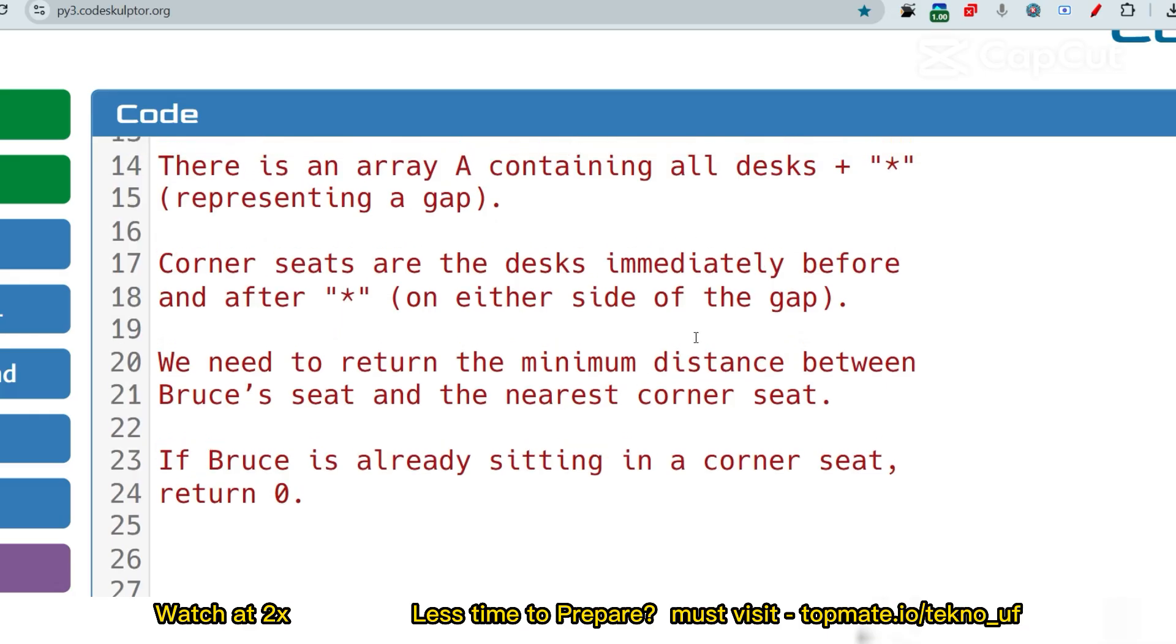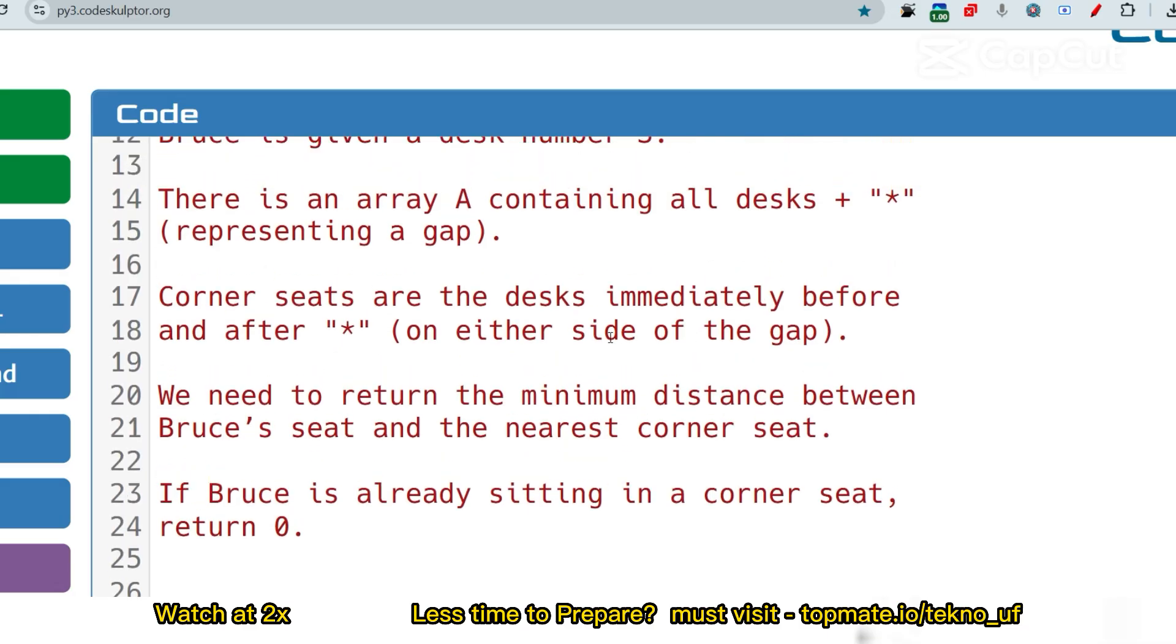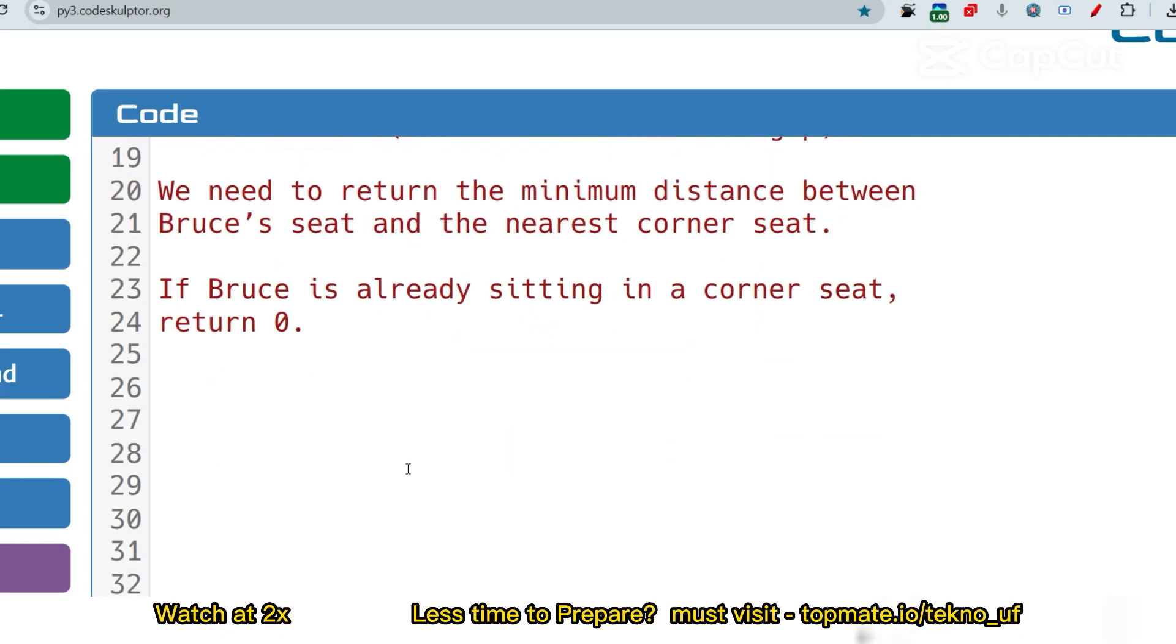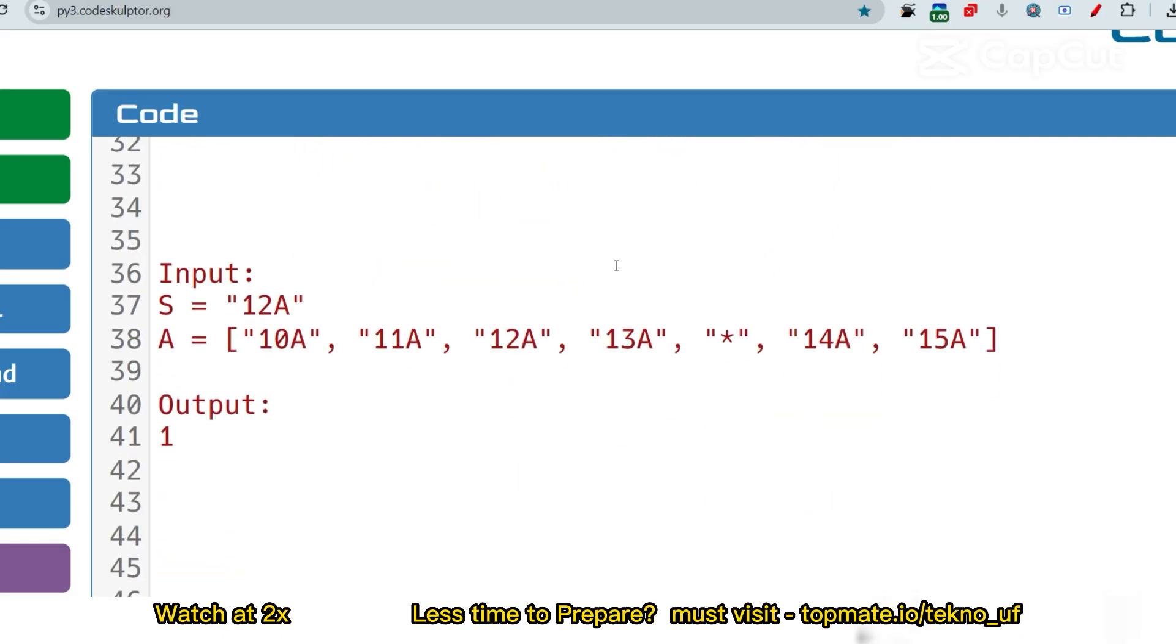If he is sitting at first index, then return the distance, minimum distance. What is the sample input? Let me just show you. This is the first sample input. If input is 12A, that means the seat is at 12A. So these are the seats and this is the 12A where he is sitting.